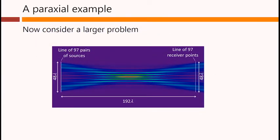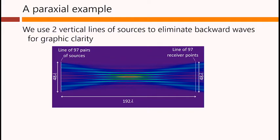Now let's look at a larger problem. This will be what we will call a paraxial example. Here we have two vertical lines of sources, but very close together, but this is for a technical reason to eliminate backward waves for graphic clarity. This line of sources is over here.